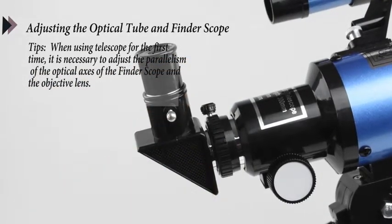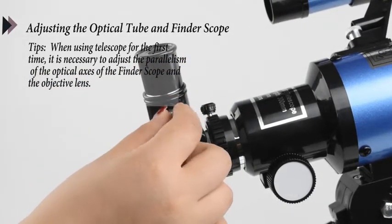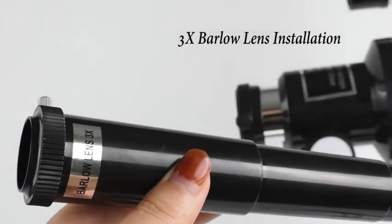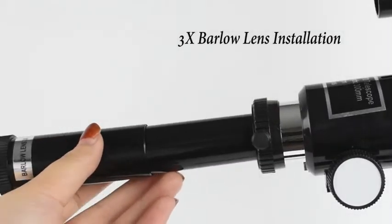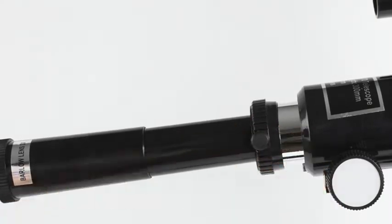Install the 20mm eyepiece into the diagonal mirror and tighten the set screw. When high magnification observation is required, a 3x multiplier can be inserted between the eyepiece and the diagonal mirror.